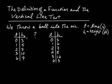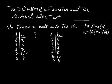Remember, t is time and h is height. The first table says: when time is 0, height is 3; time is 1, height is 5; time is 2, height is 7; time is 3, height is 10; time is 6 seconds, height is 7. You might notice the ball is at the same height at different times — and that's okay, because if you throw a ball up and it's at 7 feet on the way up, on the way back down it might be at 7 feet again. So heights can repeat.